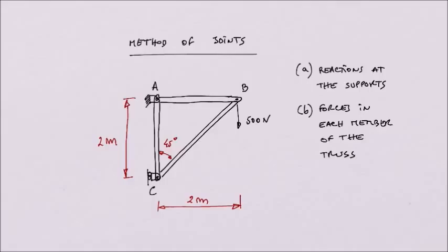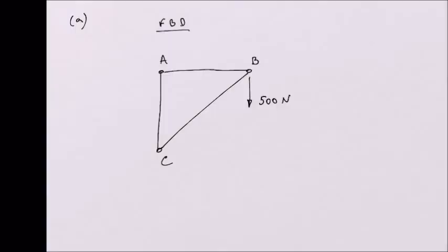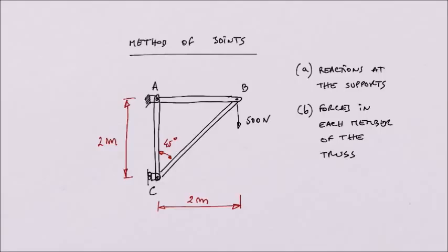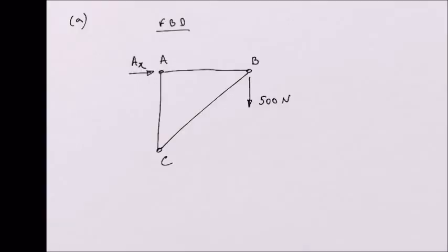If we want to move point A in the horizontal direction, that is not allowed, so we need to include a horizontal reaction at point A — I am going to call it AX. Same thing for the vertical direction: if I want to move point A vertically, the support will not allow that, so we need a vertical reaction as well, which I will call AY.